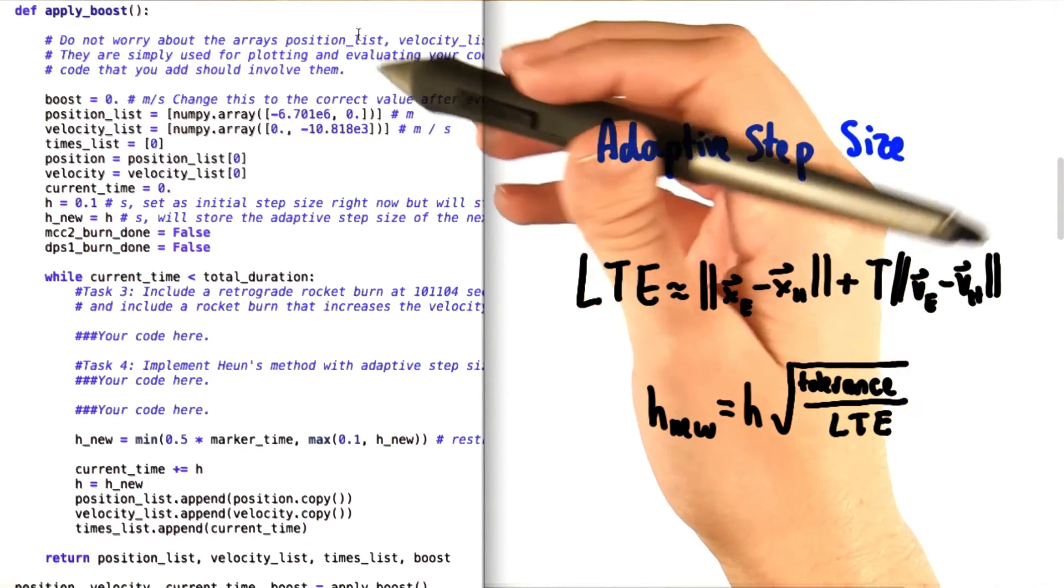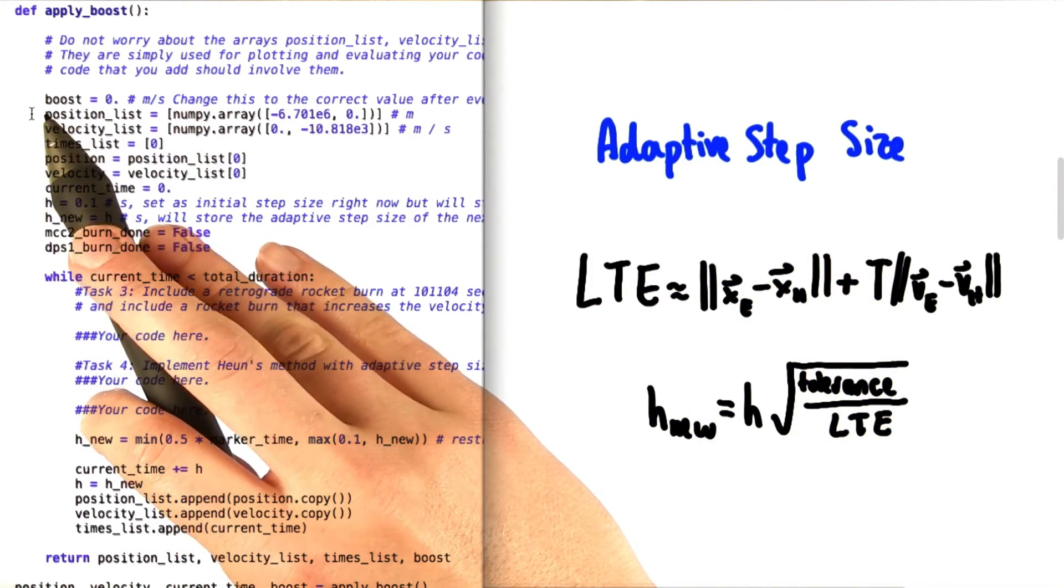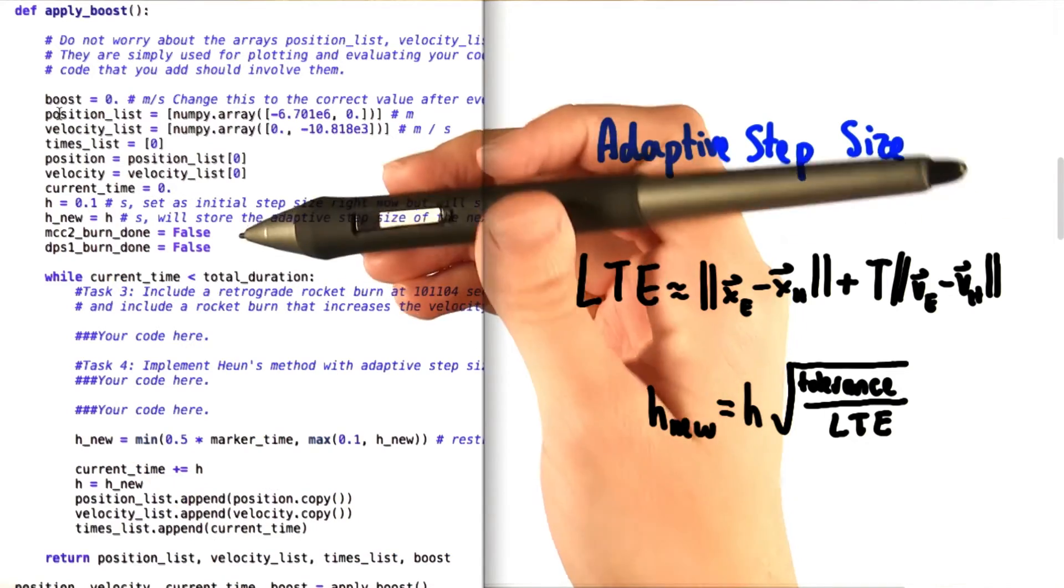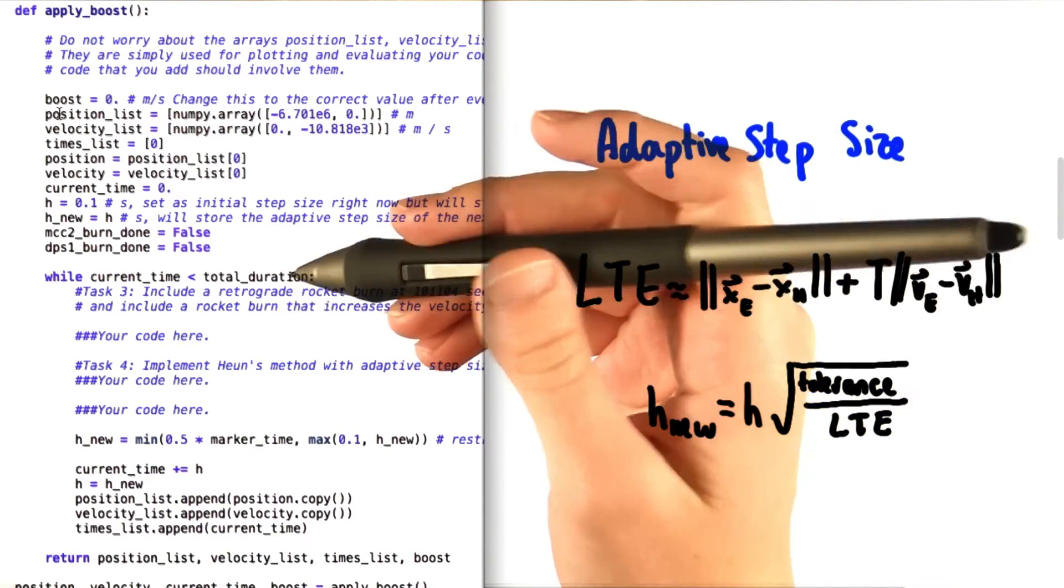Now, once we've filled everything in, we're going to go back to the top of the apply_boost function and figure out what the proper value of the constant boost is. Remember that our goal is to get the spaceship all the way around the moon and then have it just touch the surface of the earth when it comes back.